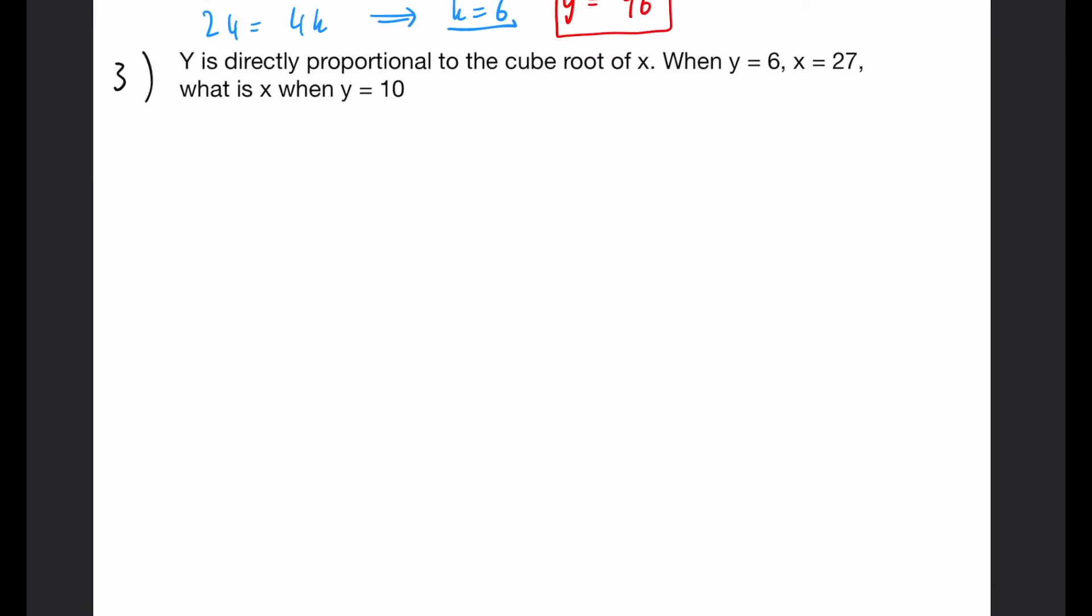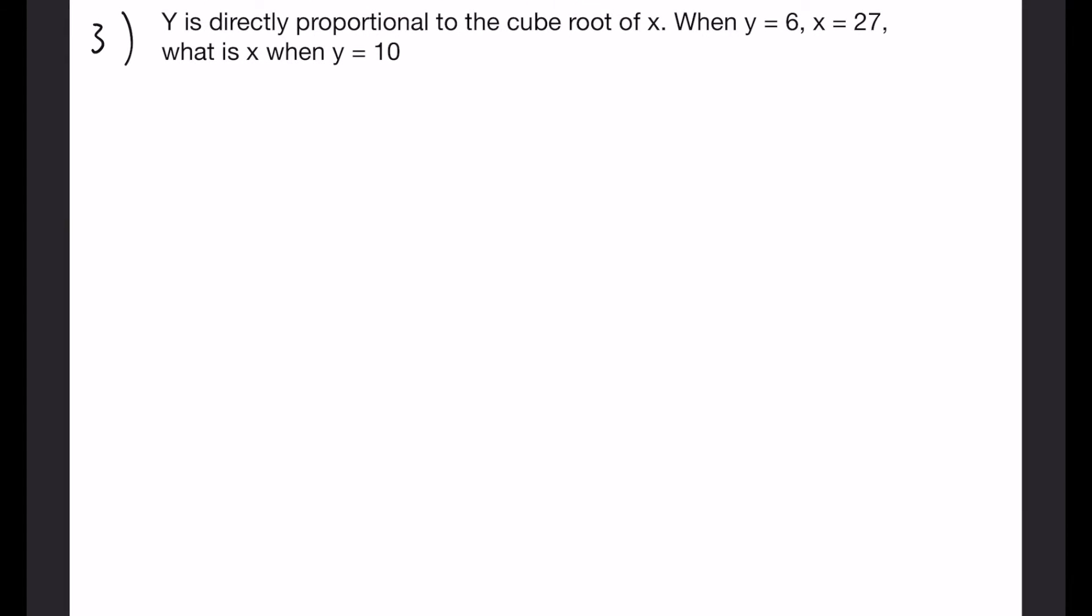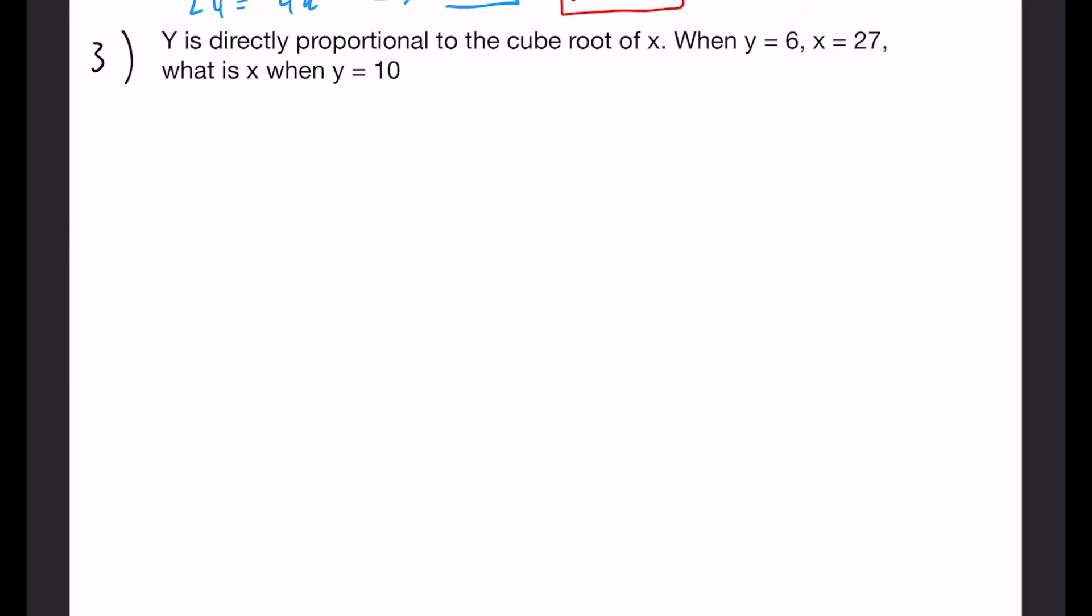Okay for our final question y is directly proportional to the cube root of x. So writing this in terms of our little symbols y is proportional to the cube root of x. So converting that into an equation y equals k multiplied by the cube root of x. Now we're given the two comparison values so when y equals 6 we have k multiplied by the cube root of 27.